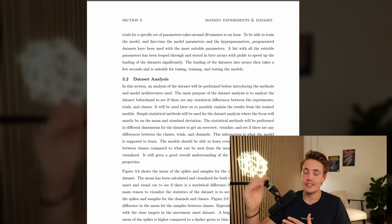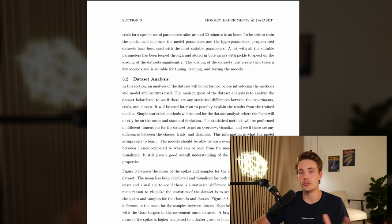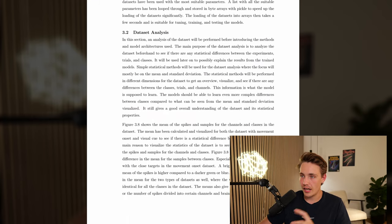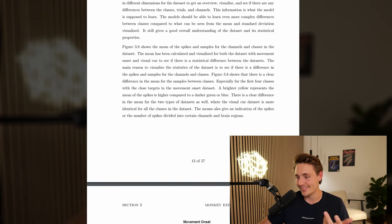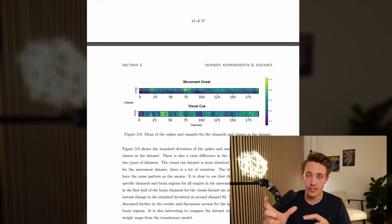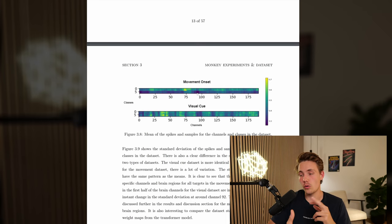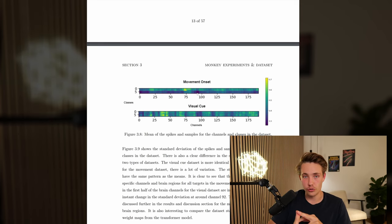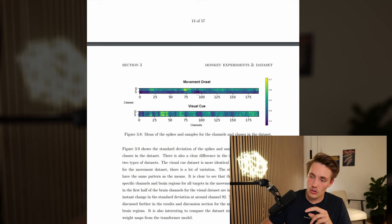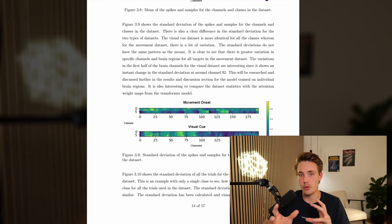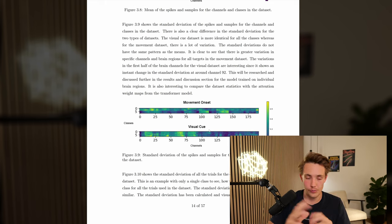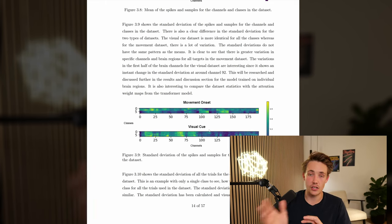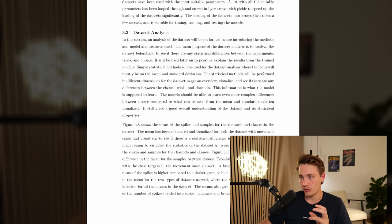We see the dataset structure, which is really important to understand in order to understand the results. I did a simple dataset analysis with some basic statistics. I also divided my dataset into two different datasets: one where the dataset starts at the movement onset when the monkey actually starts to perform the movement, and also one where the time window starts when the monkey got the visual cue from one of the light sources. I'm doing some means and also some standard deviations just to see how much variation there is in the samples for each class and for all the neurons.